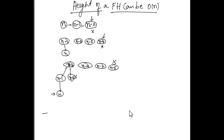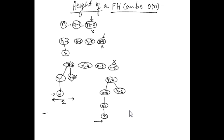The tree we get has n minus 4 at the root. One child of this is n minus 2, and the other child is n minus 3, whose child is n minus 1, which in turn has child n. So we had a Fibonacci heap of height 2 before, and now by doing a few operations we could create a Fibonacci heap of height 3.